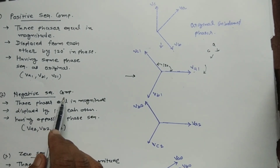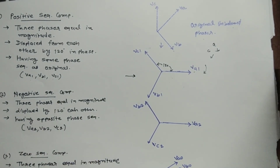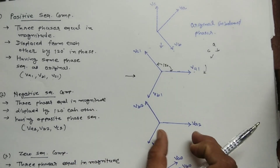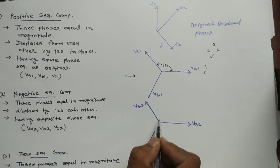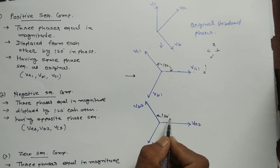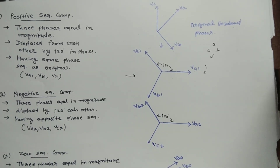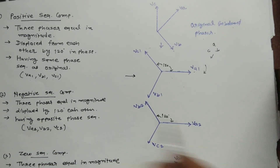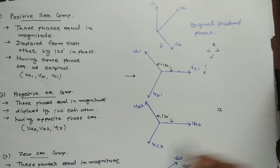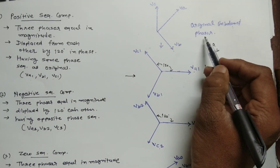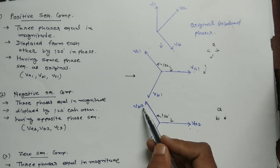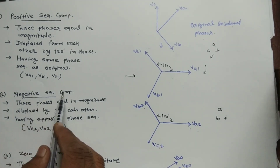Now the negative sequence component. In this component, the three phasors are also equal in magnitude and displaced by 120 degrees from each other. But the difference is the phase sequence — here the phase sequence is A, C, B, which is the opposite of the original unbalanced phasor. It is indicated by VA2, VC2, and VB2. That is the negative sequence component.